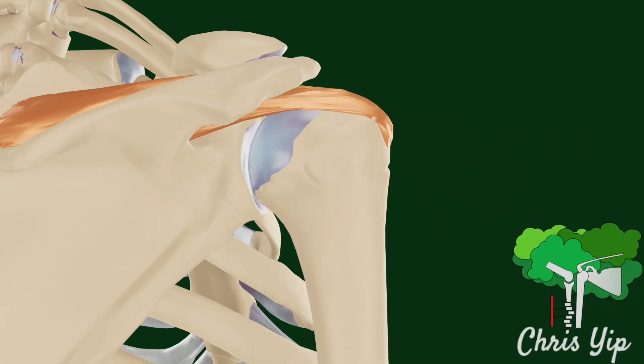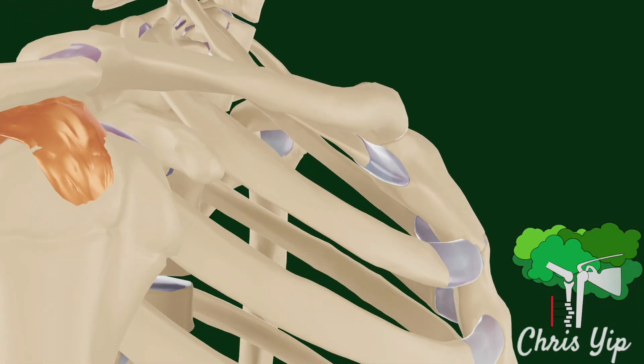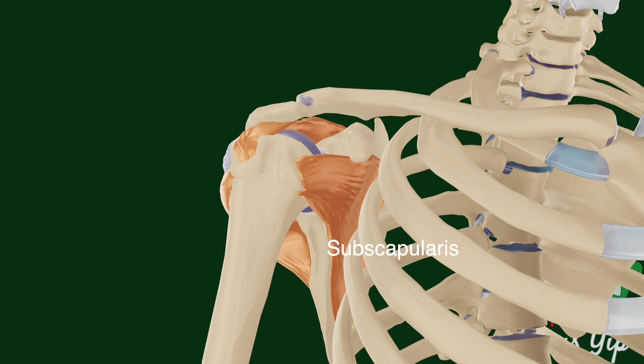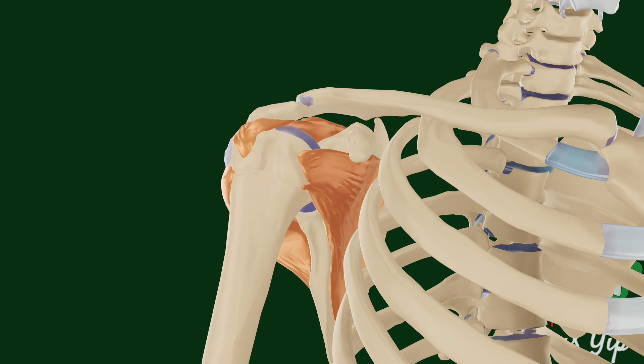Finally, recognise that the rotator cuff muscles, such as the subscapularis and teres minor, exert a slightly downwards force on the humerus. Therefore, any pathologies relating to these muscles can also result in the superior migration of the humerus, narrowing the subacromial space as well.